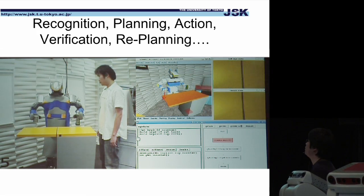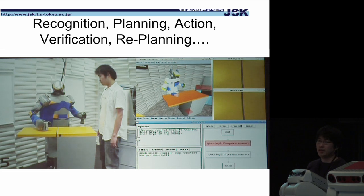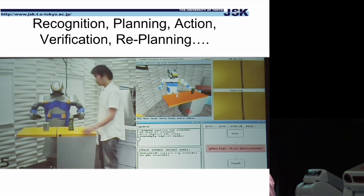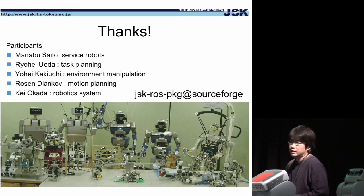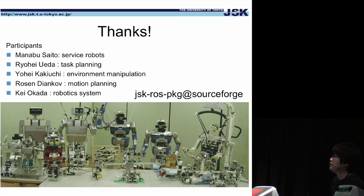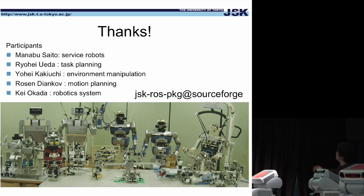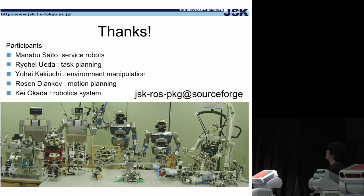In this workshop, we wish to reproduce this motion using a PR-2 platform. This is the end of my talk. In this workshop, Manab Saito, Ryohei Ueda, and Ryohei Kakiuchi — all graduate students — have joined. We just opened our SourceForge repository, the JSKLOS package, yesterday, and we are working hard to commit our software. If you are interested, please check out this repository.